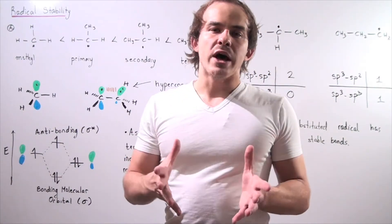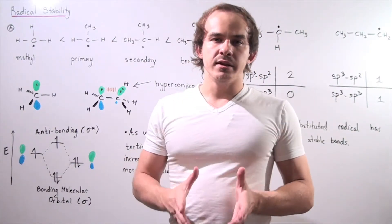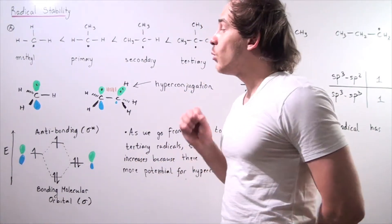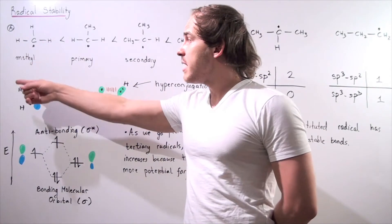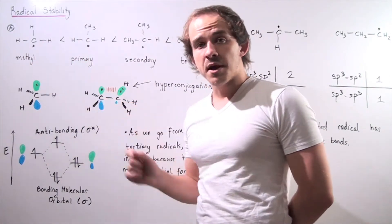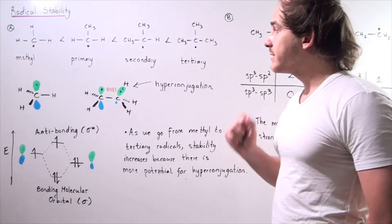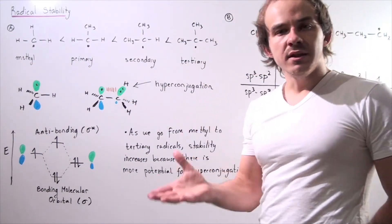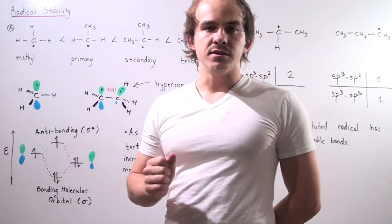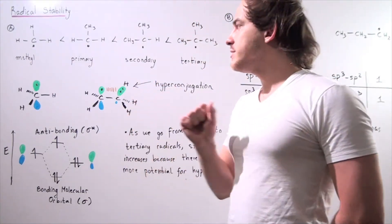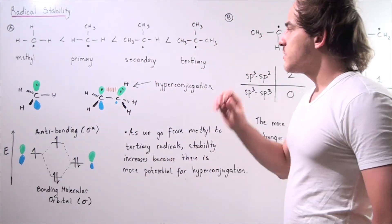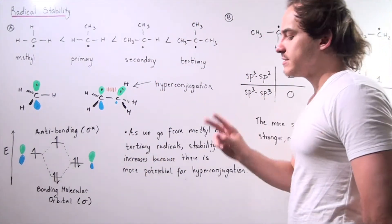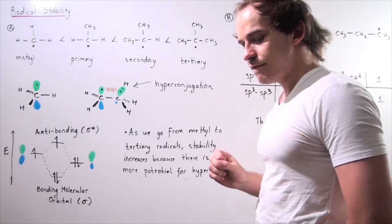Let's discuss radical stability. Why is it that when we go from methyl to primary, to secondary, to tertiary radicals, our stability of these radicals increases? The answer to this question lies in two different effects.